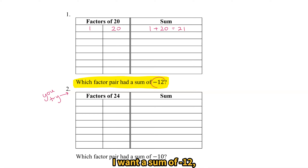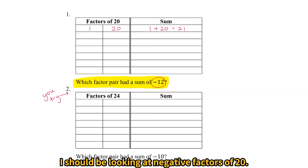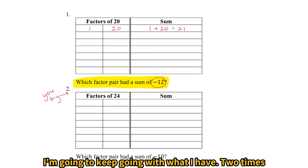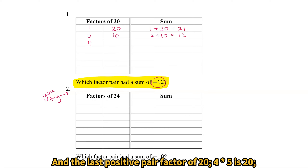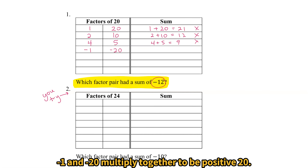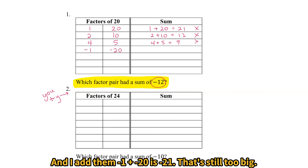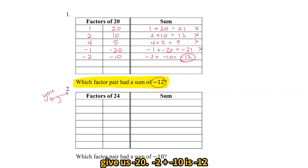What I mean by that is: I want a sum of negative 12, so I shouldn't be looking at positive factors of 20 — I should be looking at negative factors of 20. But for the sake of the game, I'm going to keep going. 2 times 10 gives me 20, and 2 plus 10 gives me 12. And the last positive factor pair: 4 times 5 is 20, and 4 plus 5 is 9. So these don't work. Let's switch to negatives. Negative 1 and negative 20 multiply together to be positive 20, and negative 1 plus negative 20 is negative 21 — still too big. So we try the next one: negative 2 times negative 10 gives us positive 20. Negative 2 plus negative 10 is negative 12. So the factor pair with a sum of negative 12 is negative 2 and negative 10.